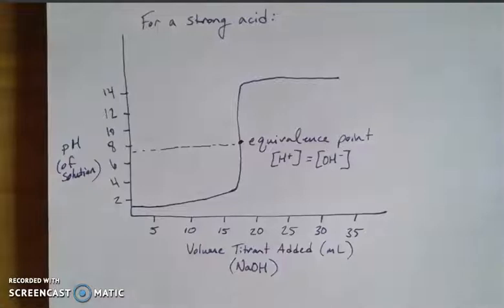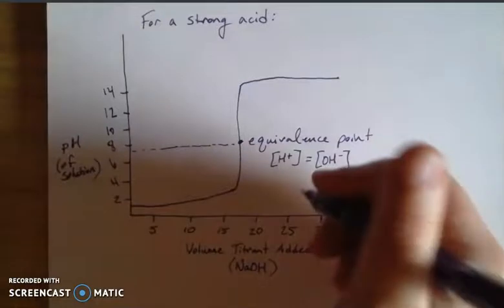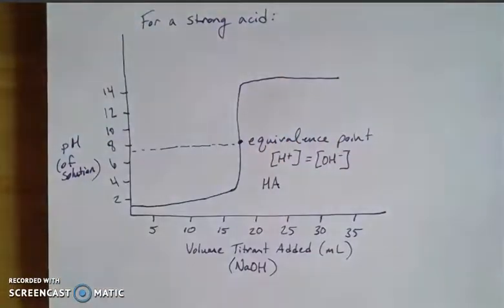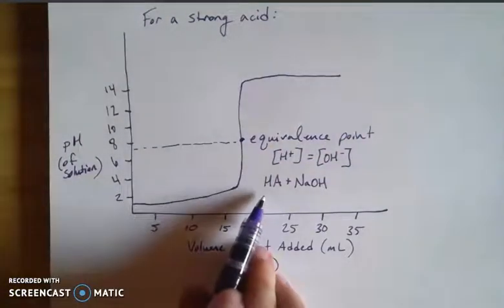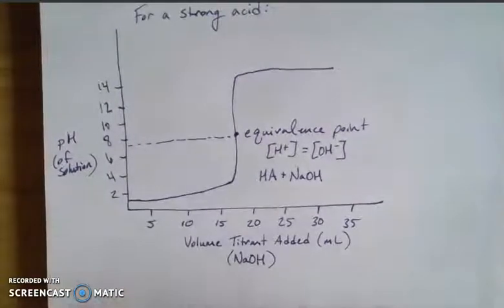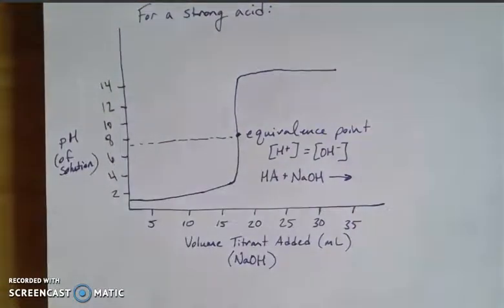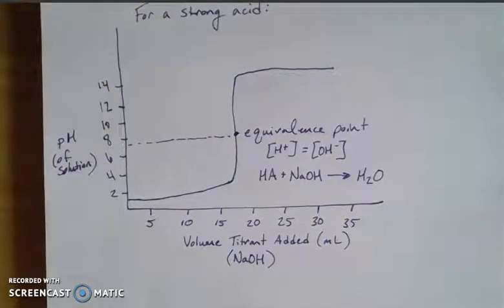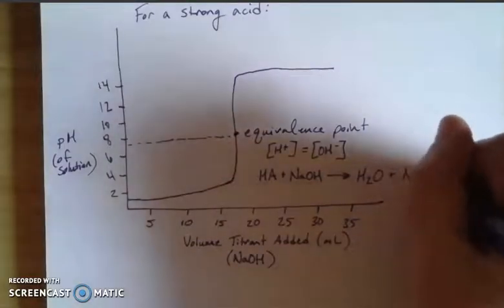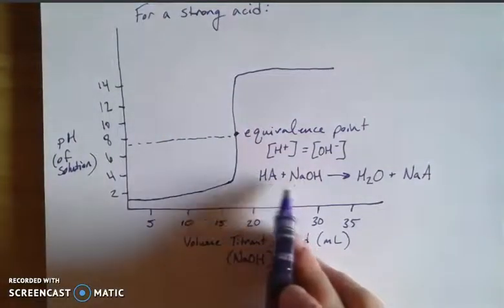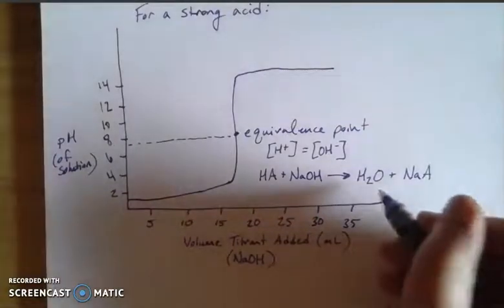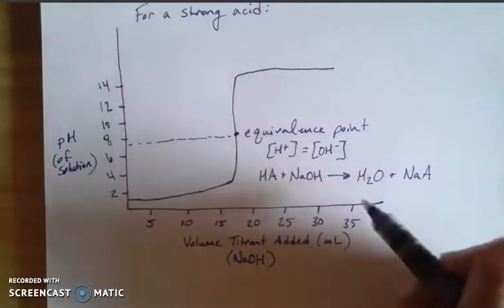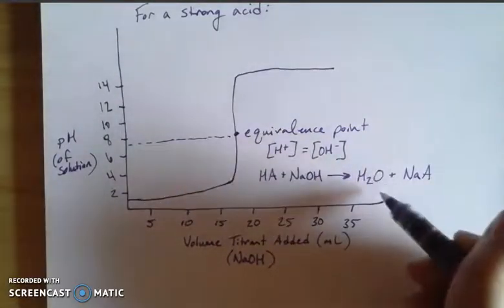If we think about the chemistry of what's going on, if this is a strong acid let's call it HA. When HA reacts with sodium hydroxide — our titrant — remember the acid is the analyte here. When an acid and a base react together, the first product that always forms is water, from the hydrogen of the acid and the hydroxide of the base, and what's left over is the salt. The salt comes from the cation of my base and the anion of my acid. If this was hydrochloric acid, the salt would be sodium chloride. The pH is going to be dependent on the products, and at the equivalence point we have pure water, which gives a pH of about 7.